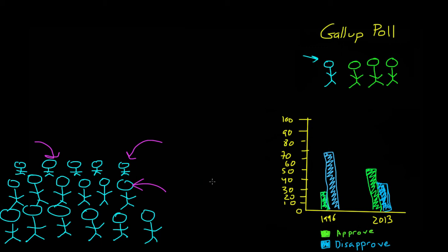Instead, they just asked a subset of the American population, or a sample of the population, and then they used that information to draw conclusions about the American population as a whole.